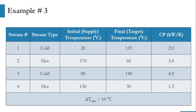This is example number three and we have been given a four-stream problem. Two streams are hot streams and two streams are cold streams. Cold stream one enters at 20°C and exits at 135°C with CP of 2. Hot stream enters at 170°C, outlet at 60°C, CP is 3. Cold stream two: inlet 80°C, outlet 140°C, CP is 4. Hot stream two: inlet 150°C, outlet 30°C, CP is 1.5. We solve this with a delta T minimum of 10°C.